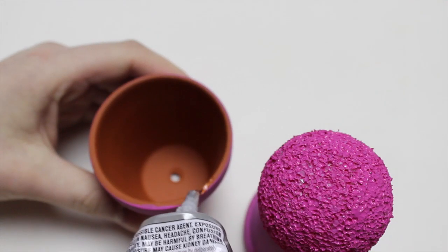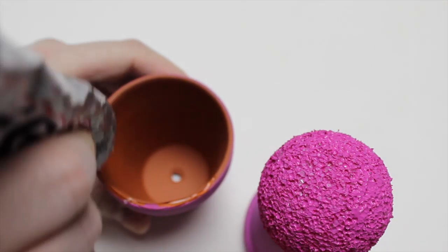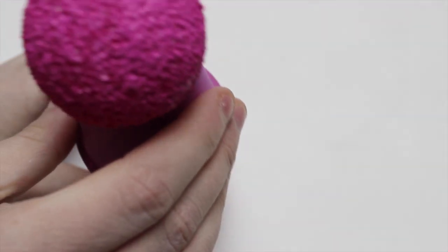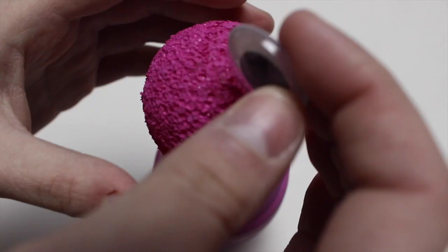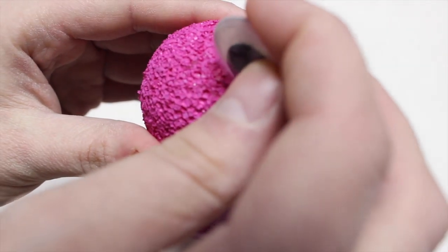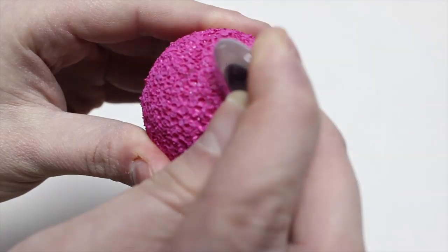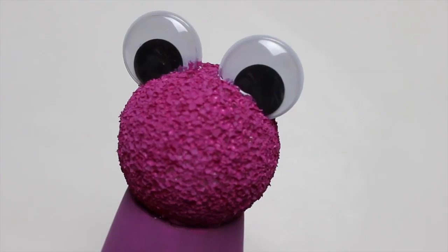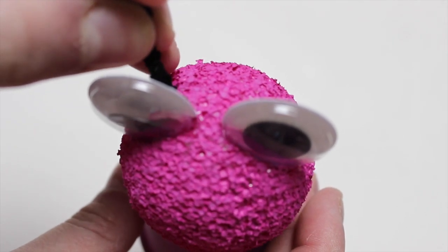Once the paint is all dry, apply glue around the edges of one of the flowerpots and stack them on top of each other. When the glue is dry, take two googly eyes and stick them into the top of the styrofoam ball. Now take the pipe cleaners and stick them in behind the googly eyes.